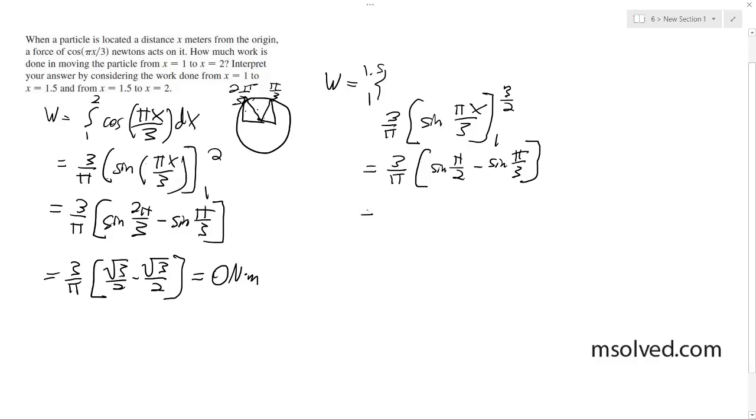So we get 3 over pi sine of pi over 2 minus sine of pi over 3, and we end up with 3 over pi times 1 minus square root of 3 over 2, which equals 3 over 2 pi times 2 minus square root of 3 Joules.